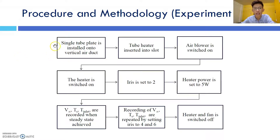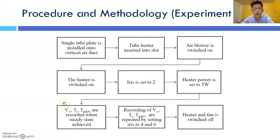In Experiment 20A, a single tube plate is installed onto the vertical air duct and the tube heater is inserted into the slot. The air blower is switched on as well as the heater. The iris is set to 2 and the heater power is set to 5W. These three variables are recorded when steady state is achieved, and then repeated by setting the iris to 4 and 6. When the experiment is completed, the heater and fans are switched off.